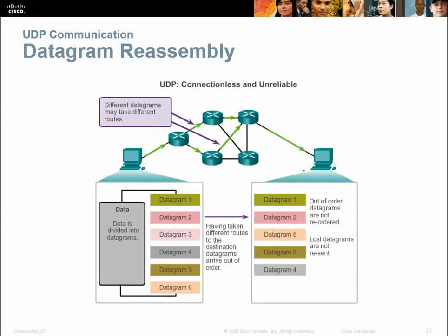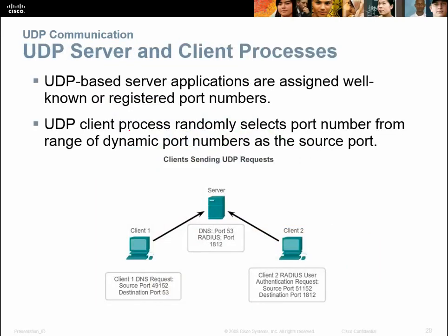With UDP, we have datagram reassembly. Datagrams may take different routes and may be reassembled out of order. Lost datagrams are not resent — it just orders them the best way it can. UDP-based server applications are assigned well-known port numbers. UDP client processes randomly select port numbers from the range of dynamic port numbers as the source port — for example, it knows it's going to port 53, but it semi-randomly selects a source port like 49152. The return traffic knows to come back to that source port because that information was in the packet.